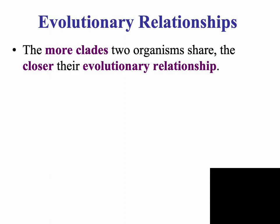A little bit about evolutionary relationships: one of the ways we use to talk about how organisms are classified is into what are called clades. A clade is just a fancy way of saying a group, and these groups are based on the evolutionary history of organisms. The more groups that two organisms share, the more closely evolutionarily related they are.